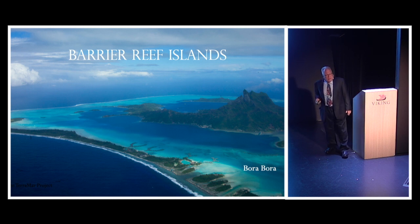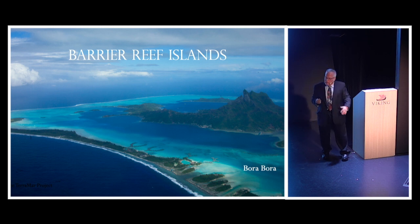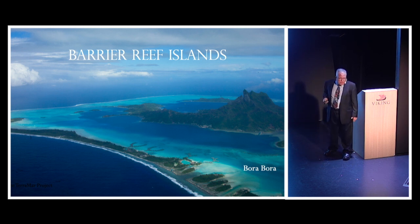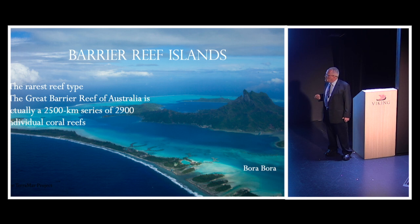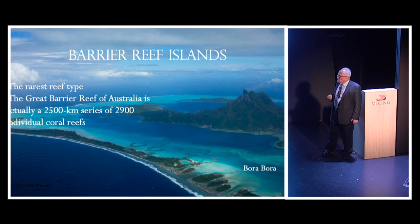The next stage Darwin saw is that once these islands have had fringing reefs built around them, they may start to wear away or sink — particularly if they're volcanoes, since lava is very easily eroded. The reef would eventually get further and further from shore, keep building up, and with the island in the center and the reef around the outside, that's a barrier reef. The Great Barrier Reef is actually not one reef — it's 2,900 individual reefs strung out over 2,500 kilometers.